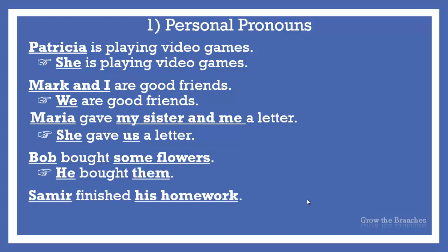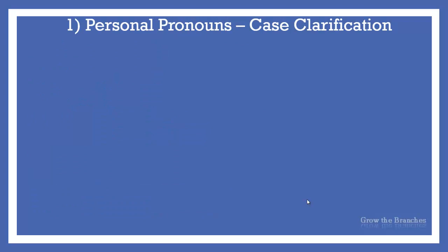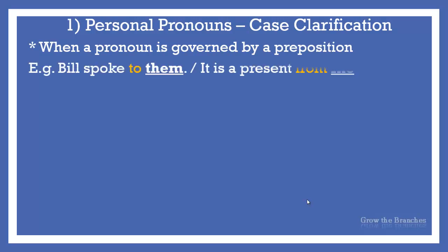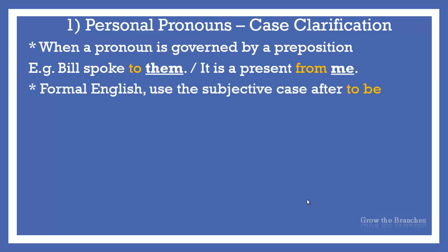Samir finished his homework — he finished it. We also use the objective pronoun when it is governed by a preposition. For example: Bill spoke to them. It is a present from me. The pronouns them and me take the objective case because they follow the prepositions to and from.